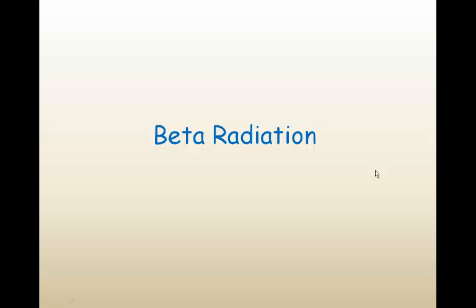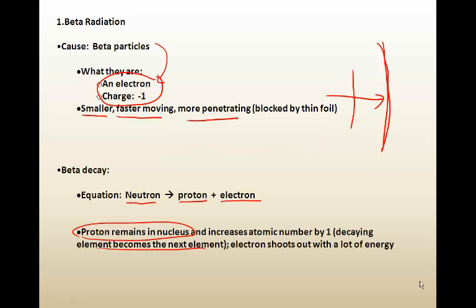Let's take a look at beta radiation. Beta radiation. In beta radiation, beta particles are produced. And a beta particle is simply one electron. So it has a charge of minus 1. Because electrons are tiny, they are very small. And these particles are very fast moving. And they're actually more penetrating to the point where they would actually penetrate that paper that the alpha particles couldn't penetrate. But they can't penetrate a thin sheet of foil. So they can be stopped fairly easily.